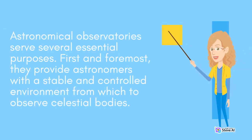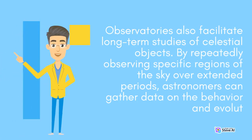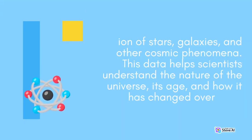Astronomical observatories serve several essential purposes. First and foremost, they provide astronomers with a stable and controlled environment from which to observe celestial bodies. Observatories also facilitate long-term studies of celestial objects. By repeatedly observing specific regions of the sky over extended periods, astronomers can gather data on the behavior and evolution of stars, galaxies, and other cosmic phenomena. This data helps scientists understand the nature of the universe, its age, and how it has changed over time.